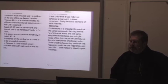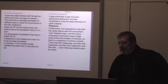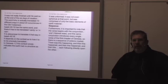It is also proper to translate it that way in Isaiah 45:18. It depends on the context as to how it is to be precisely translated. In Genesis 1:2, the context simply indicates the earth had no structure as yet. It was unformed, it was not even spherical at that point, but was comprised of only the basic elements of earth material. Sequence. Furthermore, it is important to note that the verse begins with the conjunction and. And this same conjunction introduces every single verse of the first chapter of Genesis. So there is a sequence of actions implied. There was this happening, and then this happened, and then this happened, and then this. Each following directly upon the other.